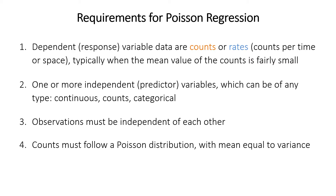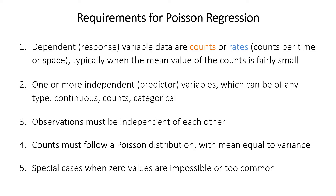The dependent variable counts must have a mean equal to the variance, because we're using the Poisson distribution to model them and the Poisson has this requirement that mean equals variance. If this isn't the case there are related methods I'll get to in this video. Also, if there are more zeros than you would expect from the Poisson distribution, or if zero counts are impossible, there are other special methods I'll talk about towards the end.